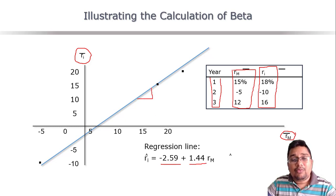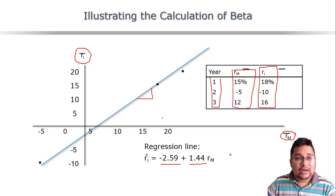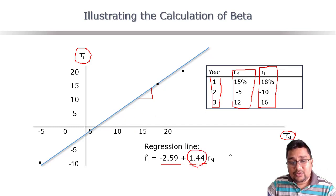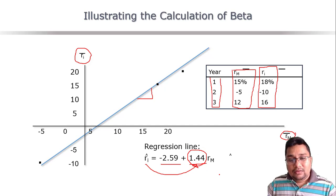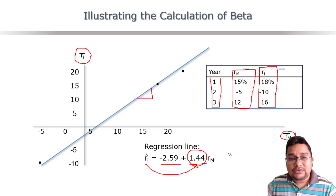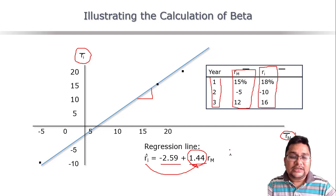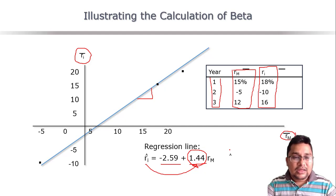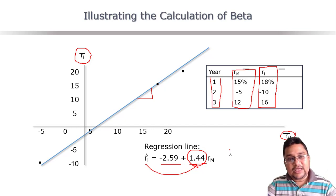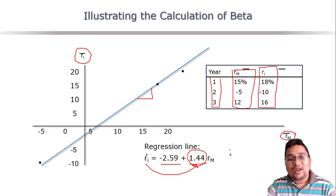The slope of 1.44 is the value of b in the straight-line equation, so the beta of security i is 1.44. This means the variability of return of security i is 1.44 times the variability of the market. In other words, if the market return increases by 1%, this security's return is expected to increase by 1.44%, and the same applies in case of a decrease. This is how you calculate and interpret beta.